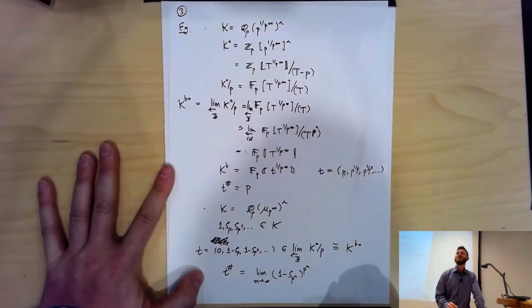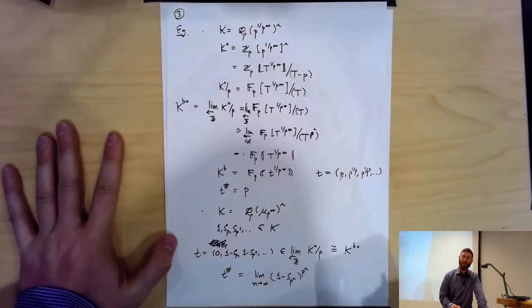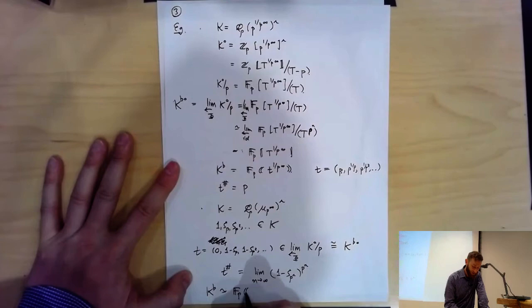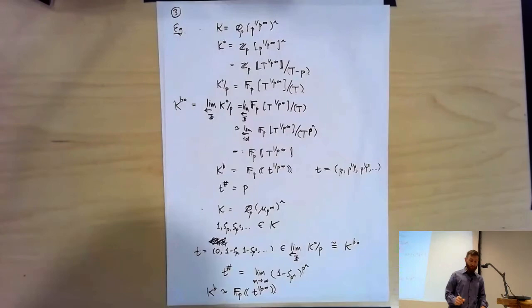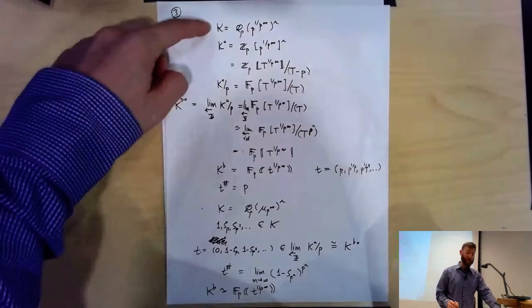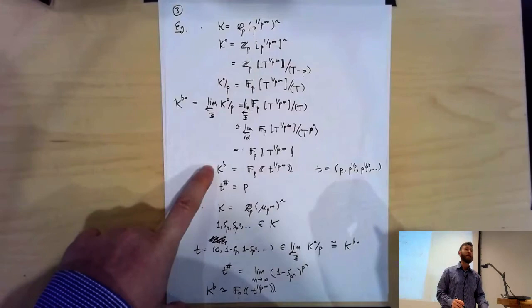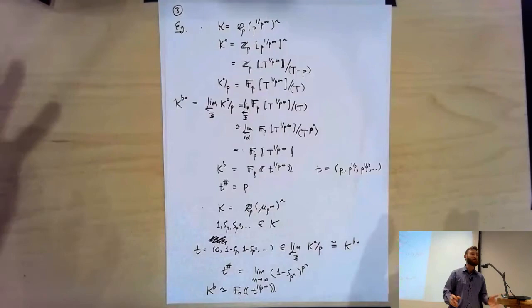This T serves as a pseudo-uniformizer for K-tilt, and in fact K-tilt is F_P((T^{1/P^∞})) — the perfect Laurent series field. Just to note: we took two very distinct characteristic-zero perfectoid fields and their tilts were isomorphic to each other. That can definitely happen. In the abstract sense, tilting isn't injective by any means.